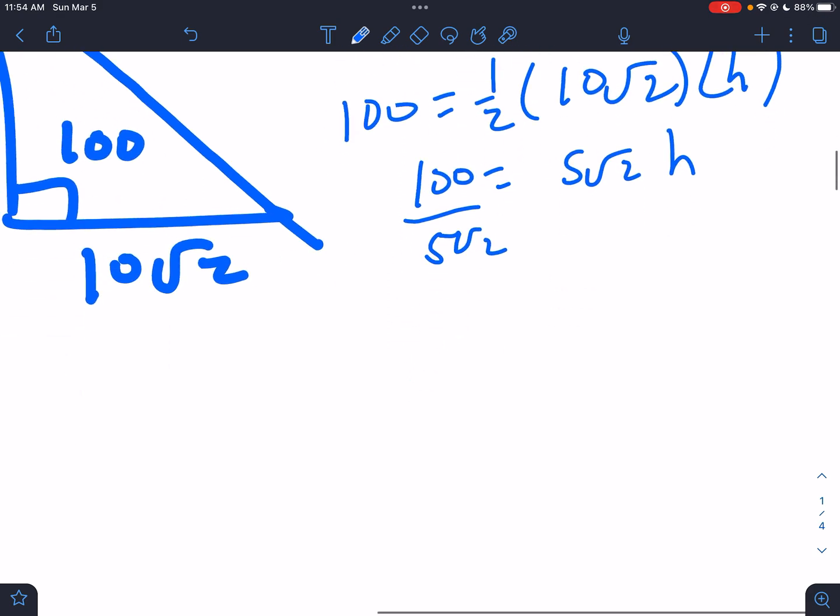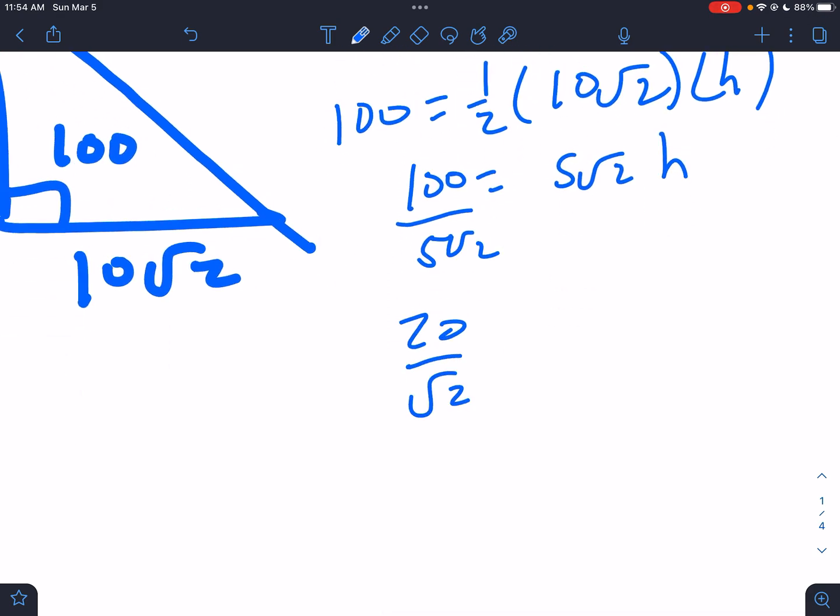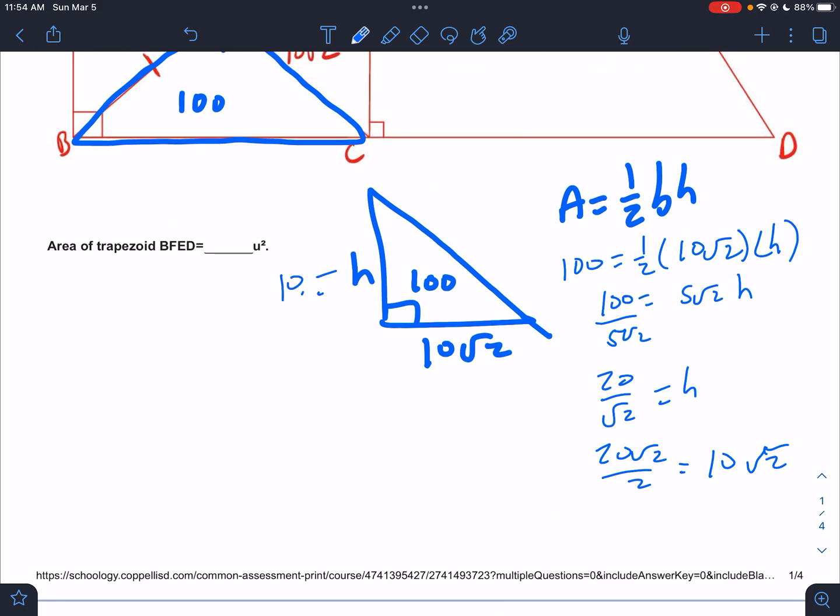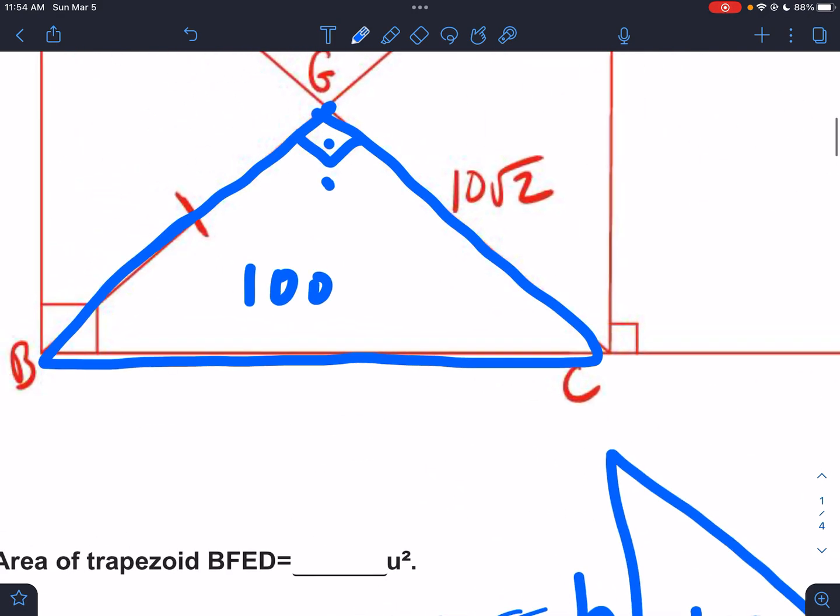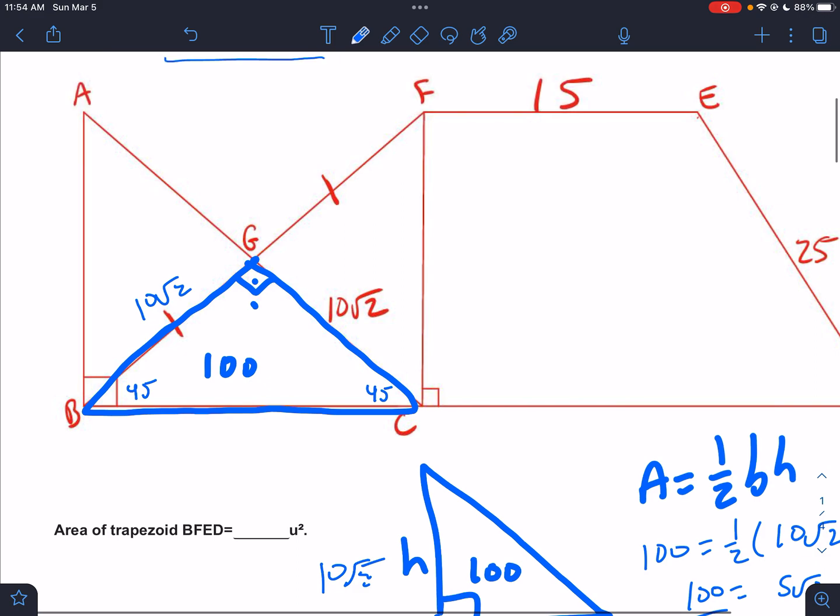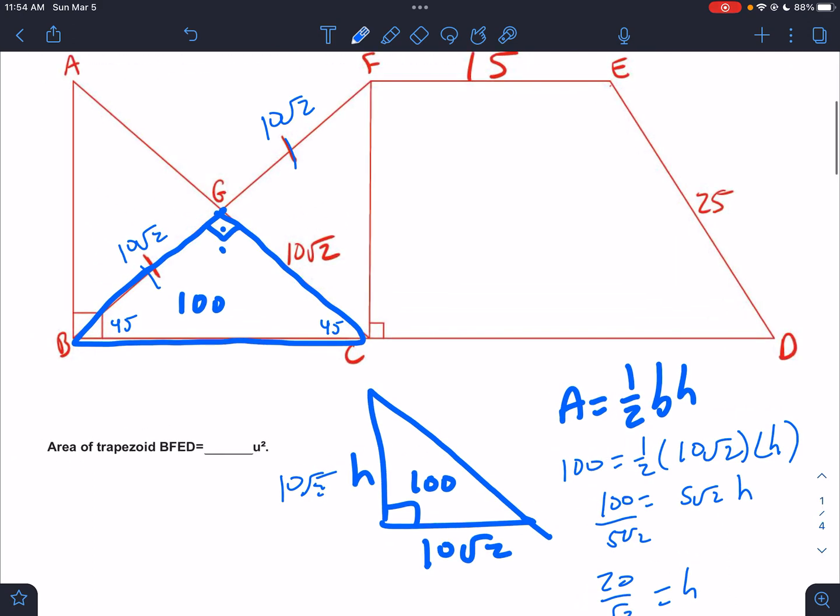Divide by 5 root 2 and you would have 20 divided by root 2 as your height. We need to clean that up - that would be 20 root 2 over 2, which is in fact 10 root 2. So this is also 10 root 2. That means that this is a 45-45-90, so these corners have to be 45 degrees. This is also 10 root 2 because they labeled these with the tick marks.